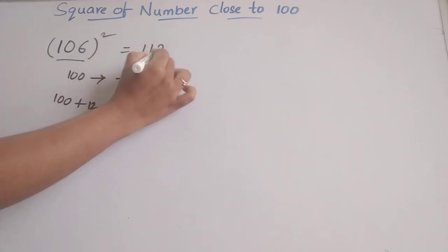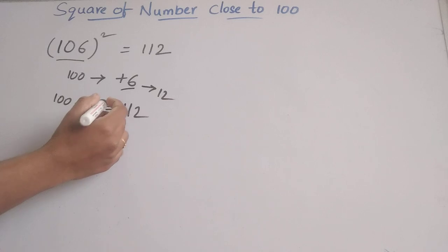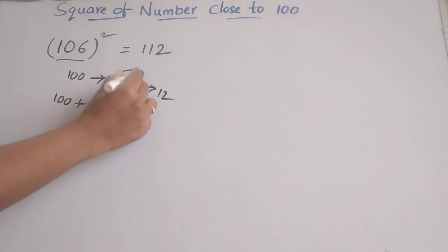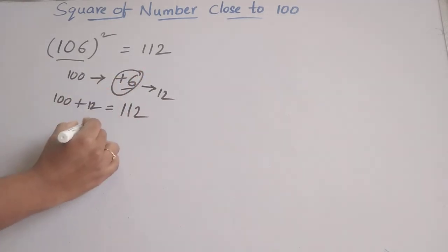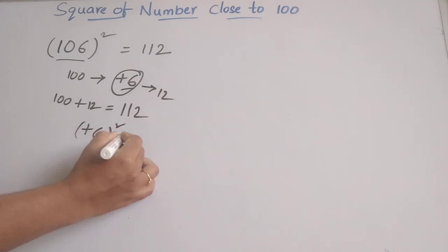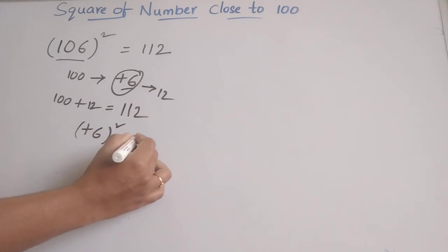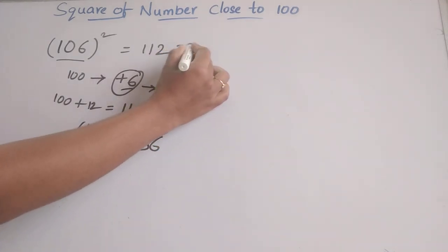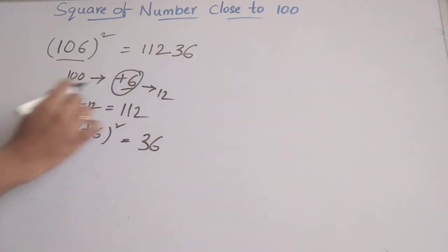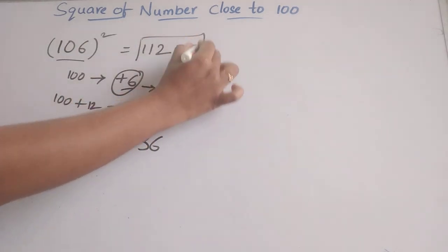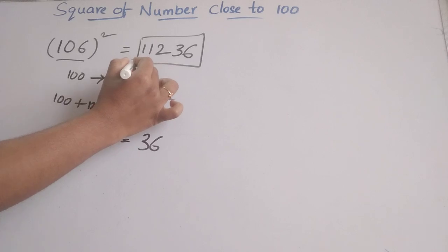We write 112 here. Now we find the square of the difference, which is plus 6. The square of 6 is 36 — write 36 here. So the square of 106 is 11236.